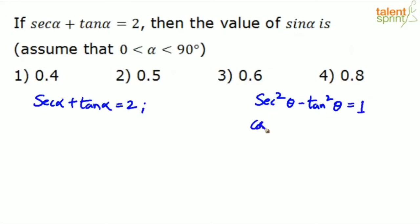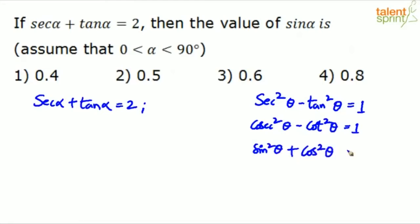The three basic identities are: sec²θ - tan²θ = 1, csc²θ - cot²θ = 1, and sin²θ + cos²θ = 1. You must understand the application of these three identities. Since sec α + tan α is given as 2, we can try to use the identity sec²θ - tan²θ = 1 to solve for sec α and tan α.